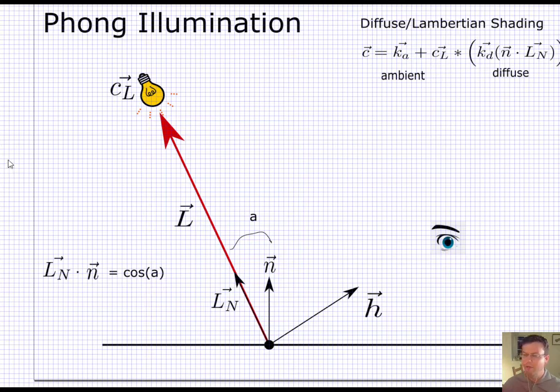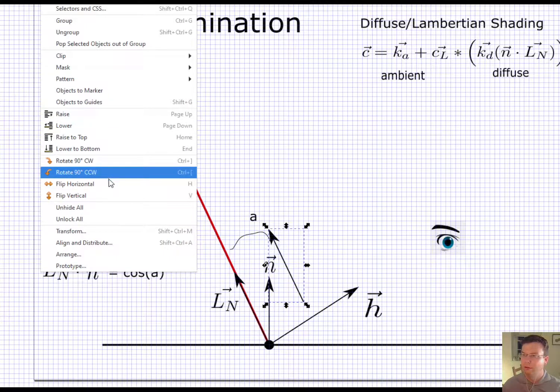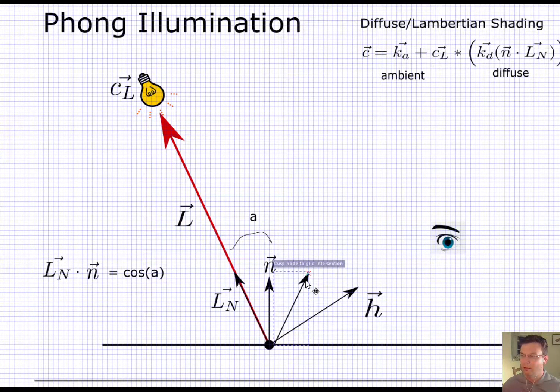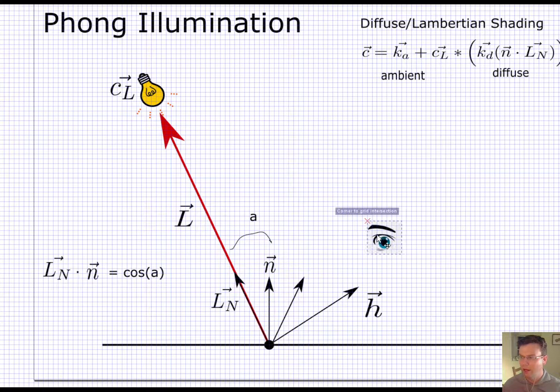Now if this is kind of a mirror material, what we can say is that the perfect angle in and angle out will give me the strongest amount of light that gets reflected back. So this direction here - if my eye happens to coincide with this direction, then I'm going to get as much light as could possibly be shining, reflecting here. And the further I am away from being at that angle, the less light I'm going to get.